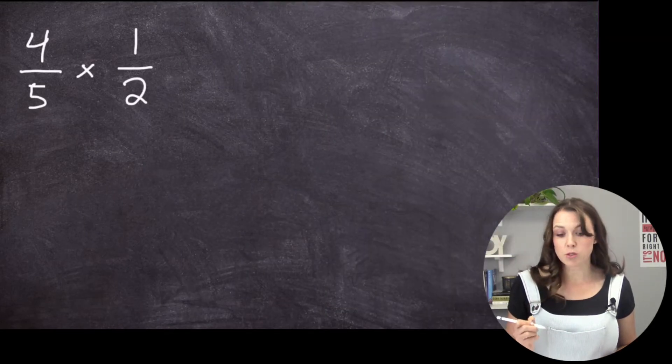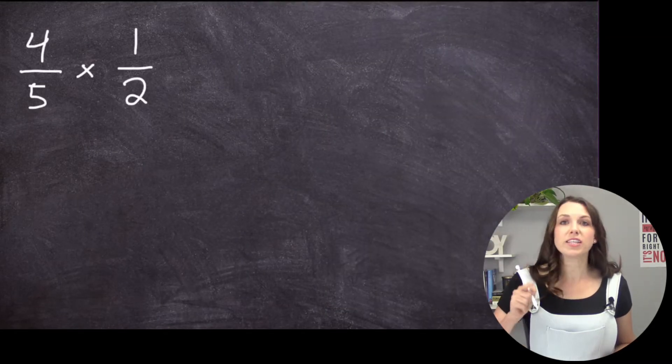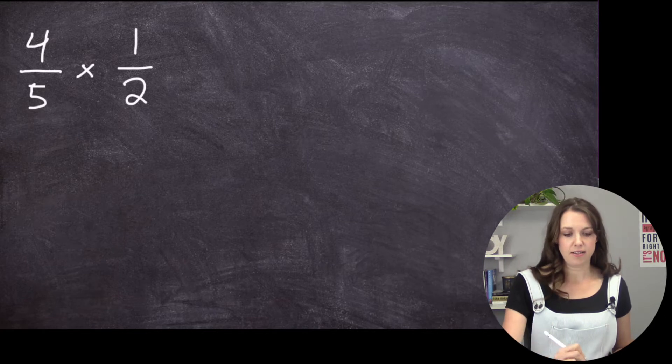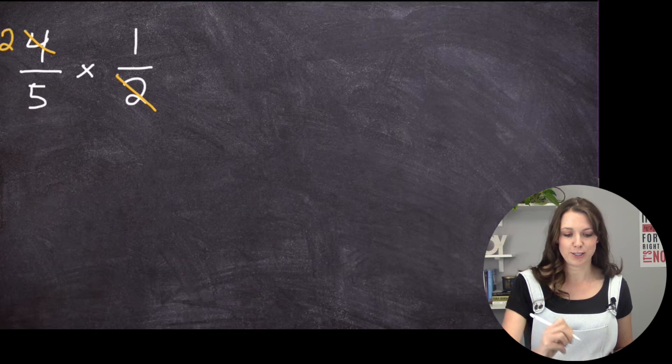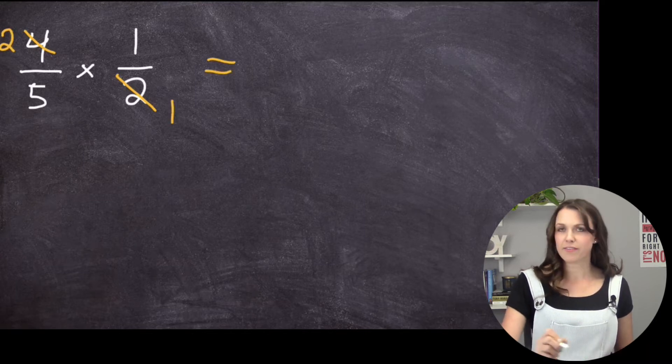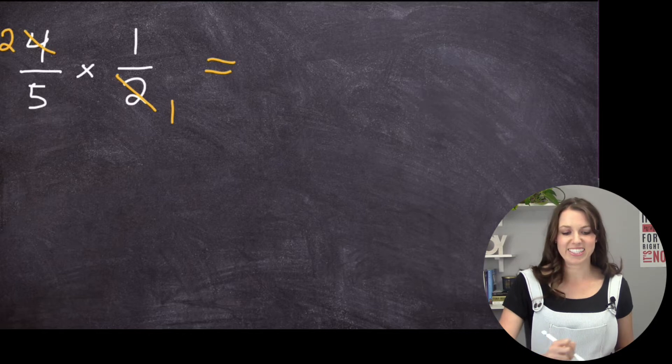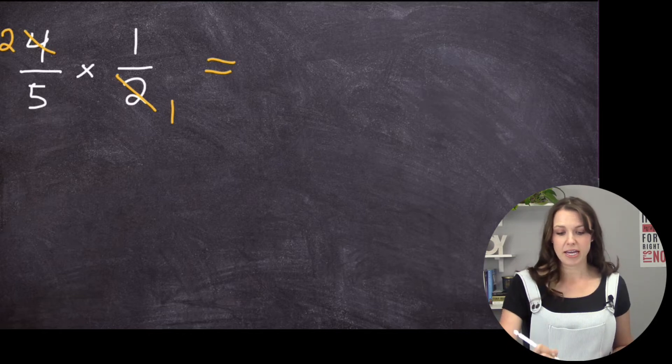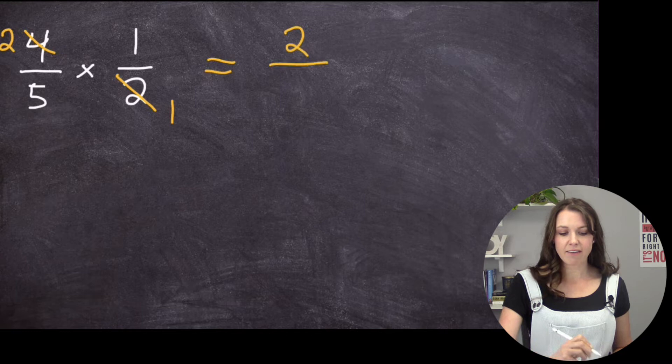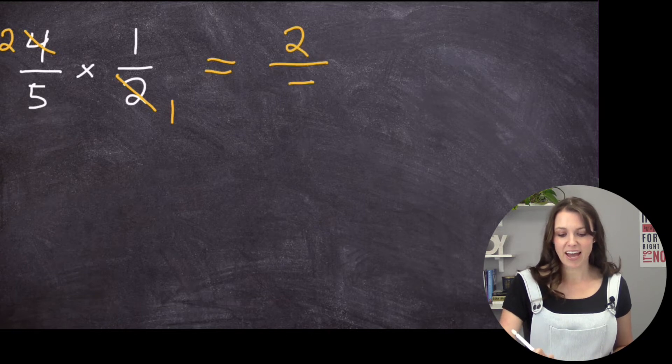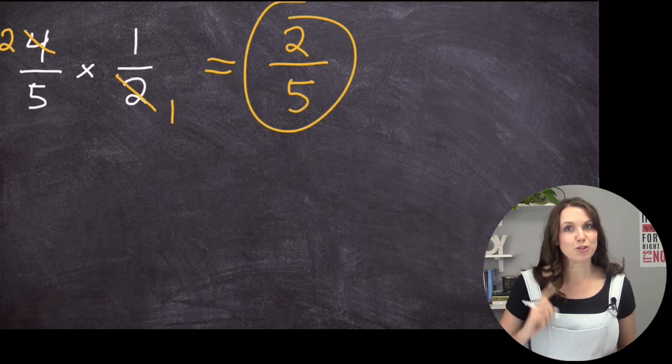4/5 times 1/2. So let's do a little bit of that cross-canceling again. So 4 and 2, right? 2 goes into 4 two times. And 2 goes into 2 one time. And now 5 and 1, I can't do anything. So 2 times 1 is 2. And 5 times 1 is 5. So that's our answer, 2/5.